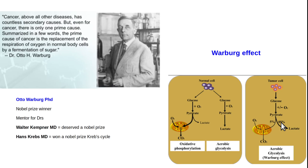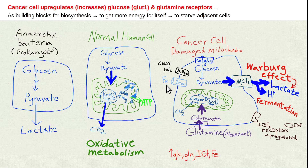This metabolic shift is also relevant beyond cancer: immune system cells go into something similar when fighting infections, and during embryology and rapid growth phases, normal cells do this too — because running the Krebs cycle in reverse can generate synthetic intermediates for biosynthesis. Evolutionarily, before oxygen was widely available, cells are thought to have run the Krebs cycle backwards.